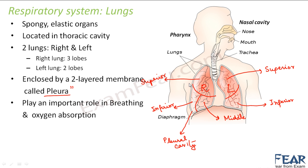The pleural cavity contains a pleural fluid which lubricates the lungs and prevents friction. A fluid outside the lungs makes the surface slippery and prevents any resistance to movement. Lungs play an important role in breathing and oxygen absorption. Because they absorb the oxygen we breathe in, they are elastic — they can expand to accommodate the extra air taken into the body.